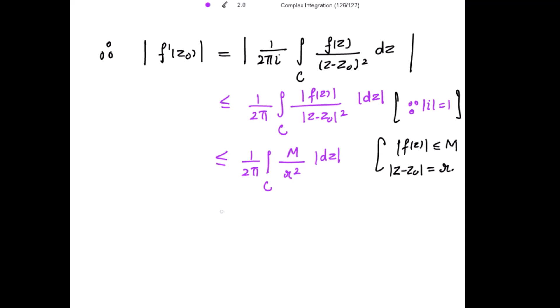Let's take all these constants outside. So this is M divided by 2πr² integral over C of |dz|.